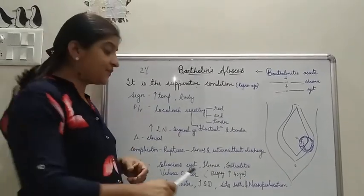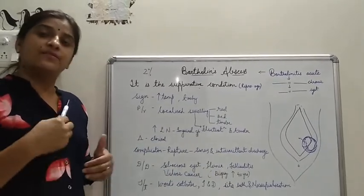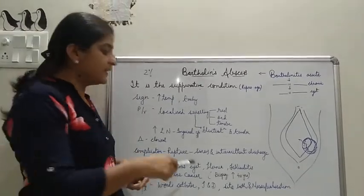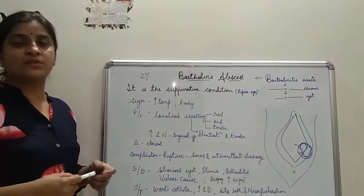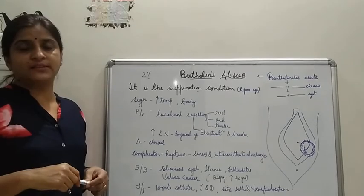But even after incision, drainage, or drainage procedures, there can be recurrences. If a woman gets frequent recurrences—three to four times—then in women who have completed their family and whose age is more, removal of the Bartholin gland is also advised.